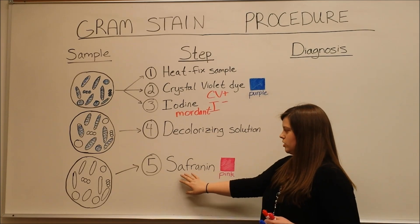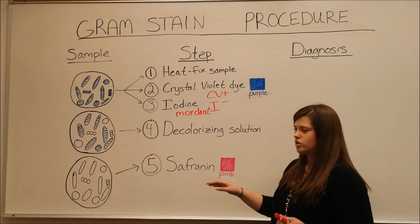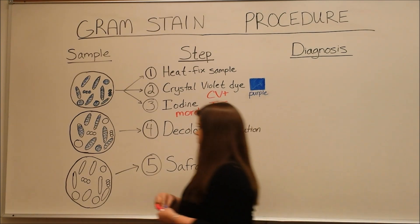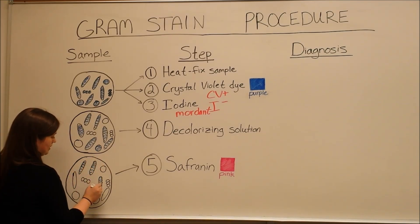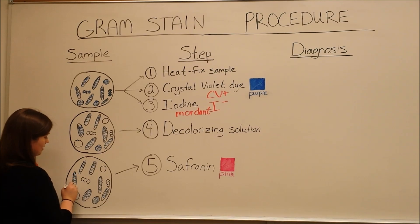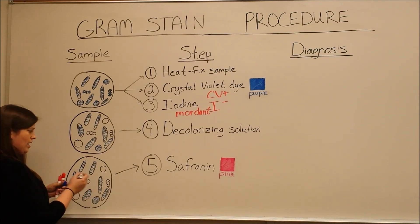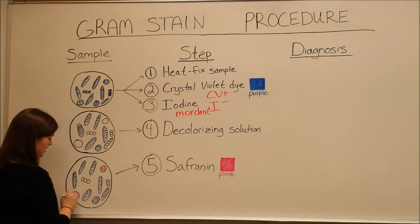Then the final step is the use of a counterstain, safranin, which has a pink color, just to help distinguish further between those two cell types. After the use of safranin, the crystal violet is still in all of the gram-positive cell walls, so these are all still purple-stained and you can distinguish that they are gram-positive, whereas the gram-negative cell walls have taken up this safranin counterstain, making them pink.